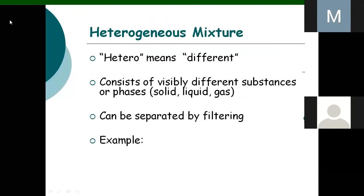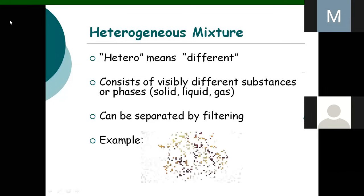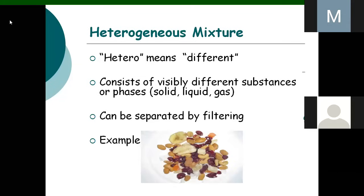Hetero means different. A heterogeneous mixture consists of visibly different substances or phases. It could be solid, liquid, or gas, and can be separated by filtering. For example, you can see a mixture where you can separate it by hand directly.